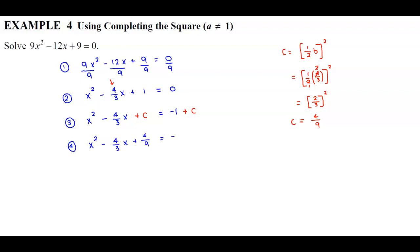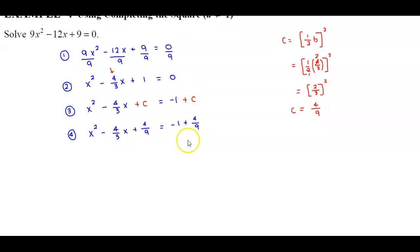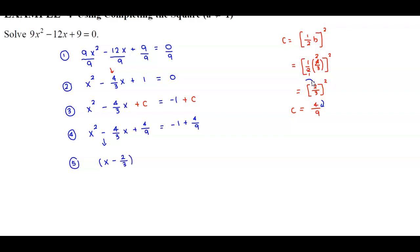That equals negative 1 plus 4 ninths. Now we factor the left side. We don't need to factor the long way because we already know what to square to get 4 ninths — it's a perfect square trinomial. Since 2 thirds squared gives 4 ninths, and this is a minus, we get x minus 2 thirds, squared.